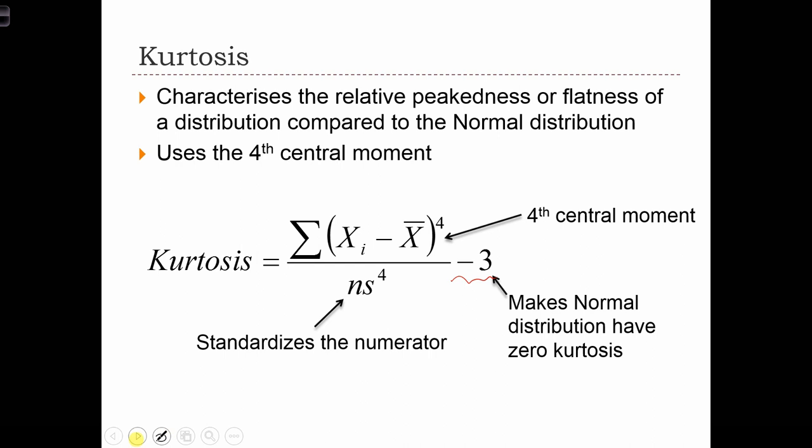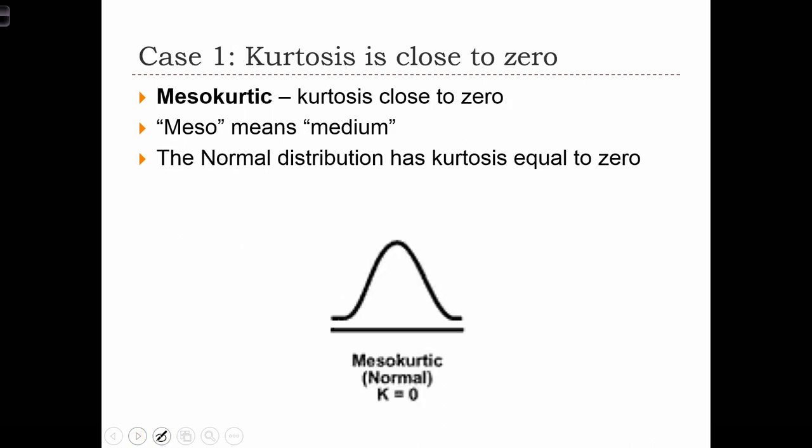We can have positive and negative kurtosis. When kurtosis is close to or equal to 0, we say the curve is mesokurtic. Meso means medium, so this is a medium level of peakness. The normal distribution, by definition, has a kurtosis equal to 0.